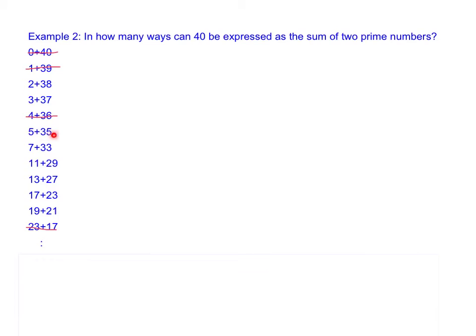Now let's go back to the list and examine the second addend in each pair to see if it's also prime. We find that 38 is not prime, 35 not prime, 33 not prime, 21 and 27 also not prime. So 40 can be expressed as the sum of two prime numbers in 3 ways.